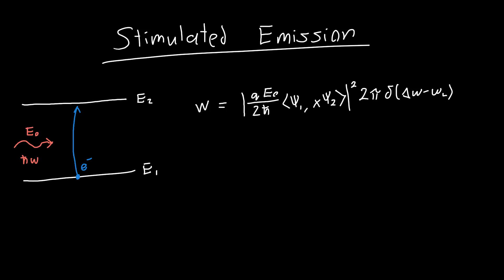The frequency of the light is omega_L, the difference in energy is delta E, and delta E equals h-bar times delta omega in this equation. So we figured out the transition rate of electrons going from state one to state two.